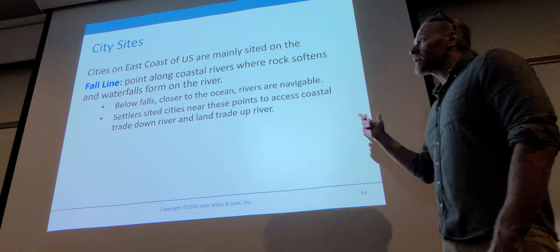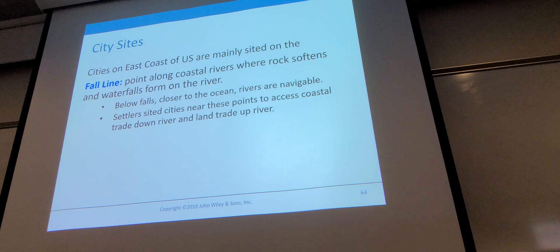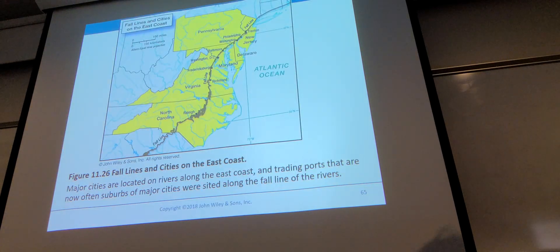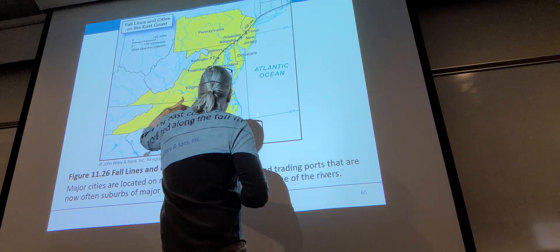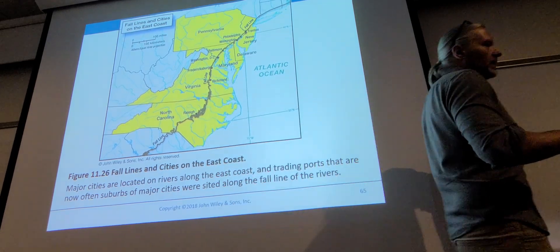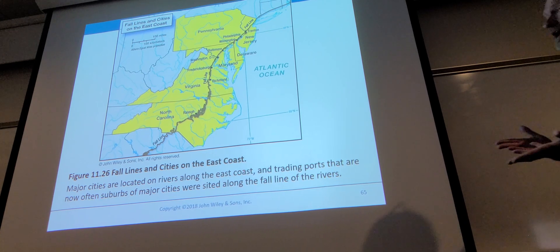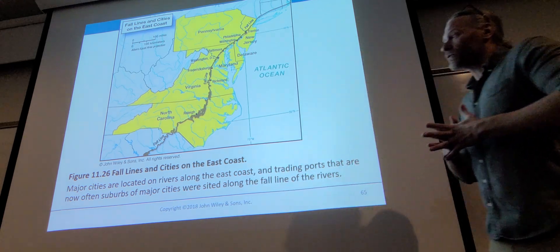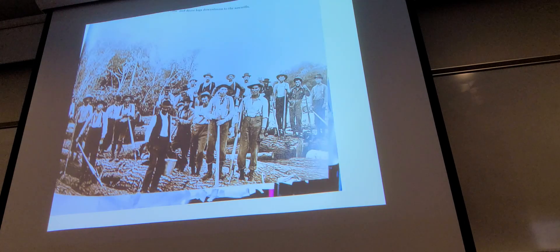A fall line is where rivers have their falls, and it's along that line that a lot of the first industrialization in the United States happened. In our area, more in the center of the continent, we don't have a fall line that lines up with others — but it's the same concept: falling water is energy.